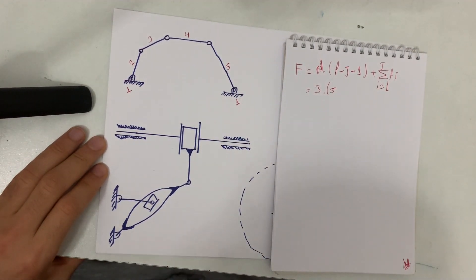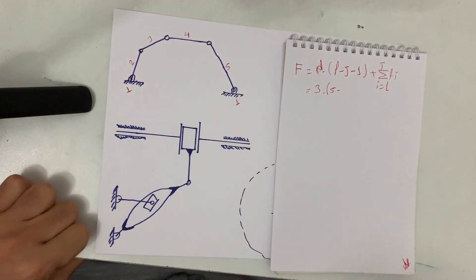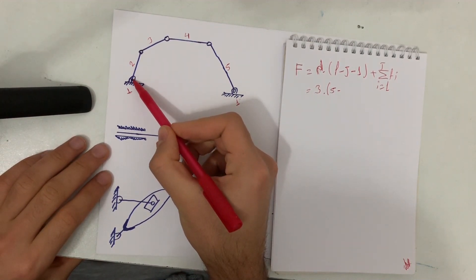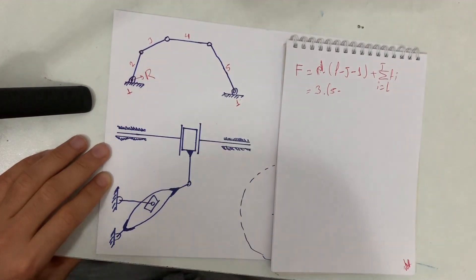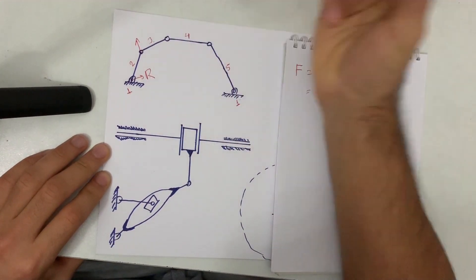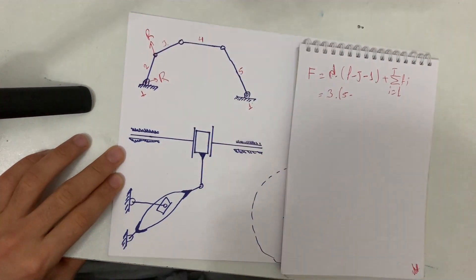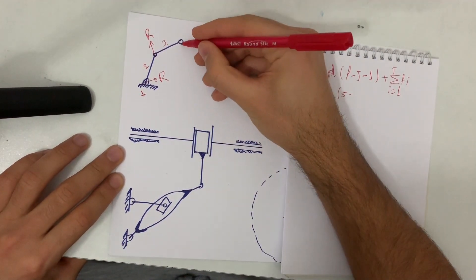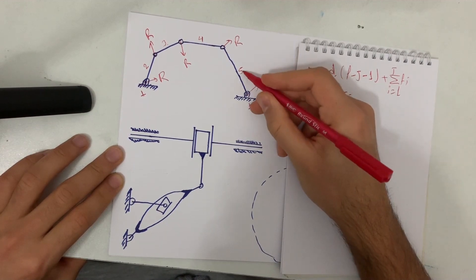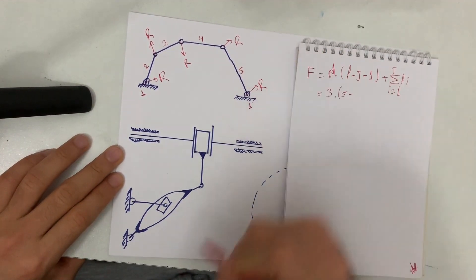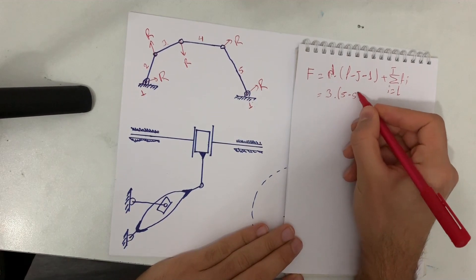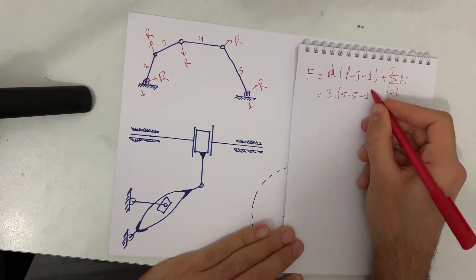Now let's find the joint numbers. Between links 1 and 2 we have a revolute joint (R). Between links 2 and 3, another R joint. Between links 3 and 4, another R joint. One more R joint, and between link 5 and the ground another R joint. So we have 5 joints total: J = 5.